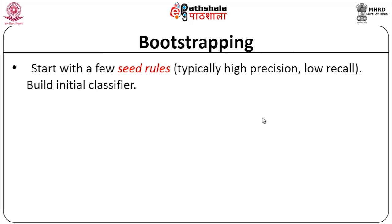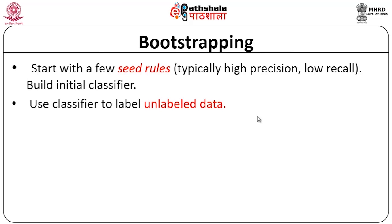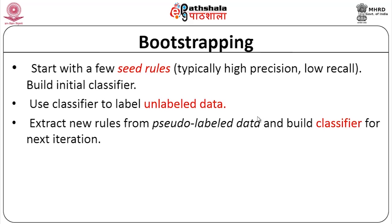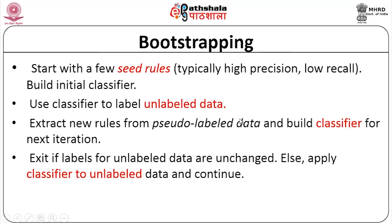Start with a few seed rules, typically high precision and low recall, meaning we are not accounting for everything. Use the classifier to label the unlabeled data. Extract new rules from the pseudo-labeled data and build a classifier for the next iteration, except if labels of unlabeled data are changed; otherwise apply the classifier to unlabeled data instances and continue.